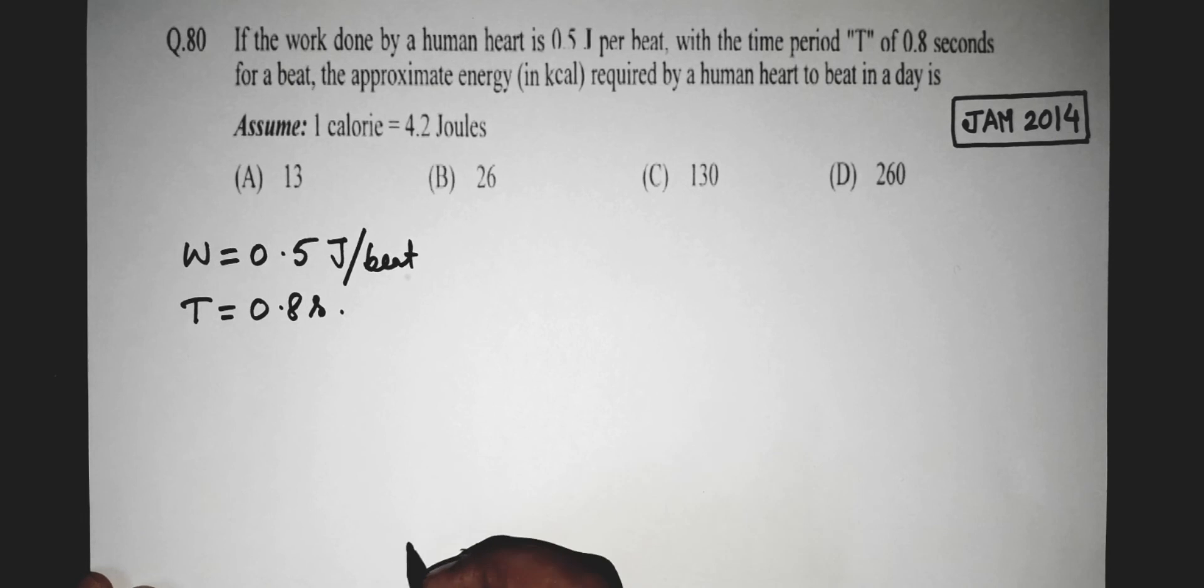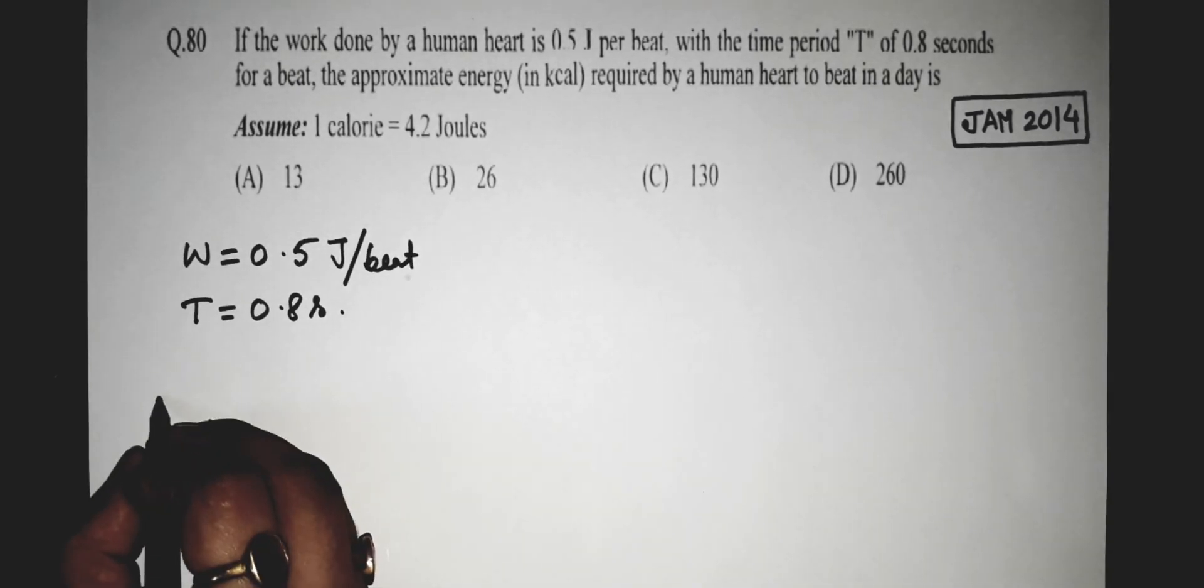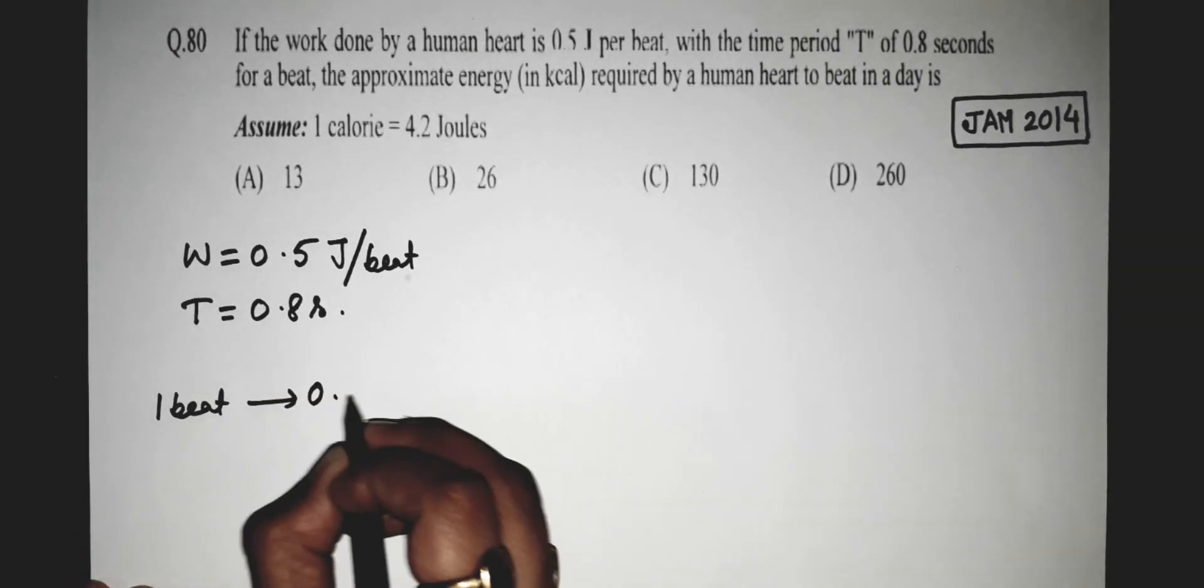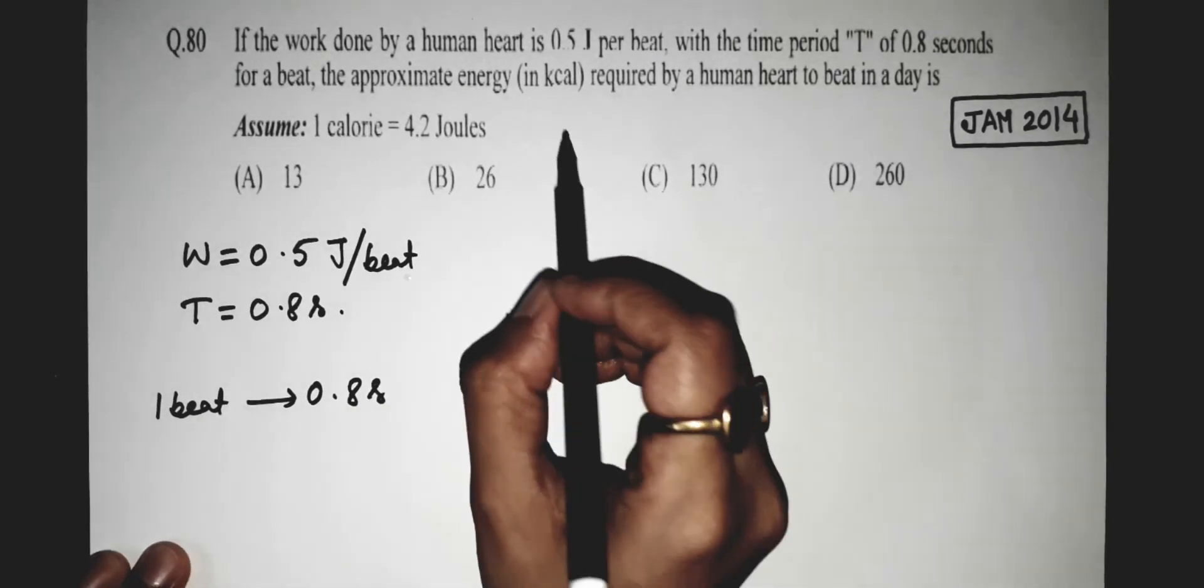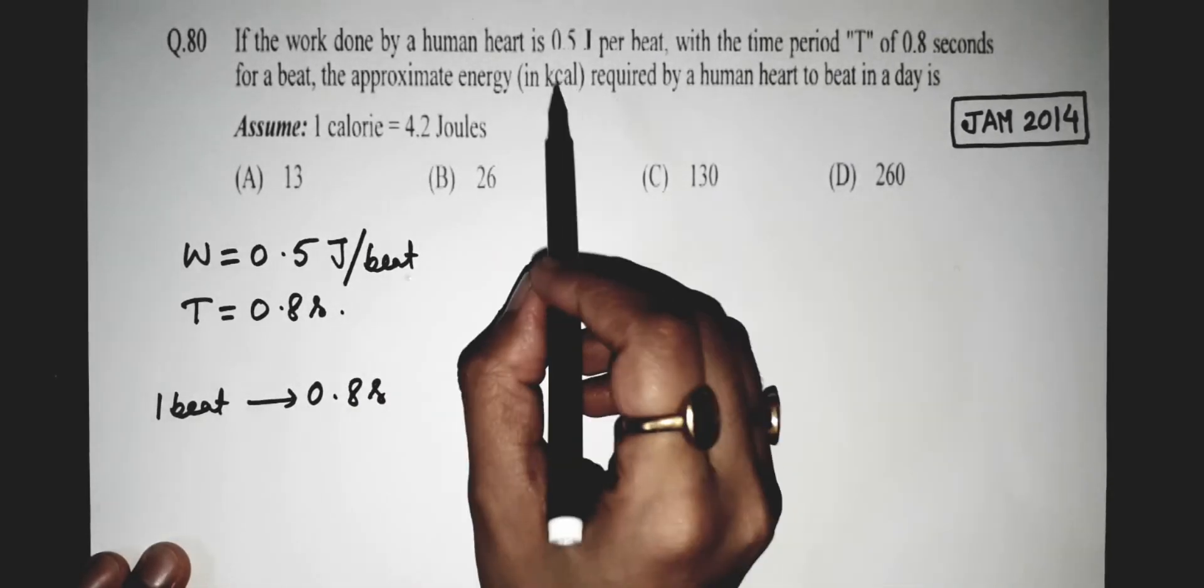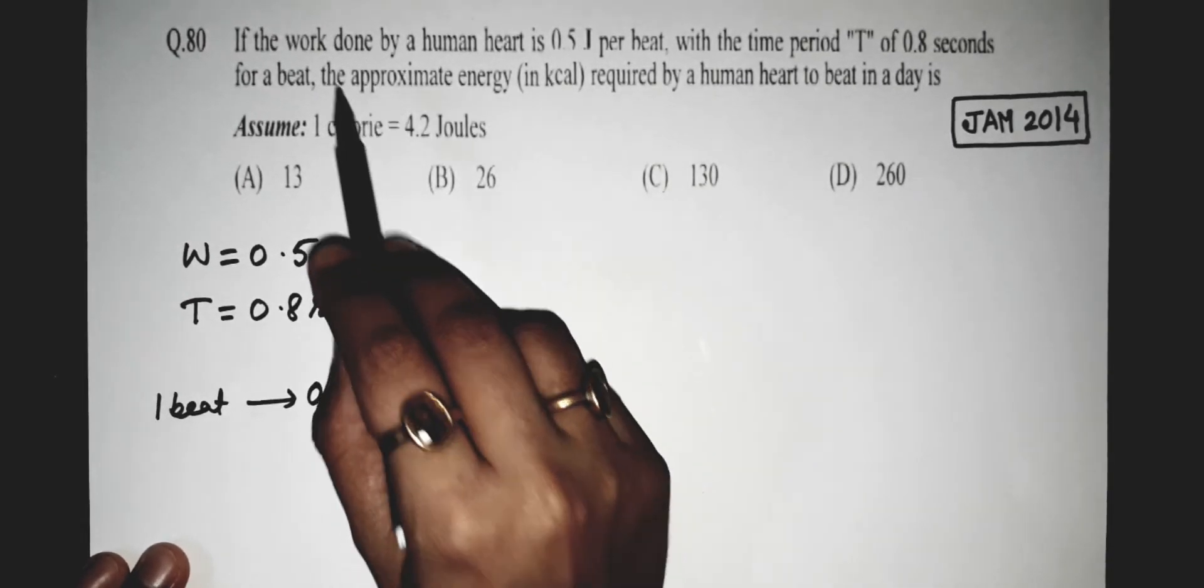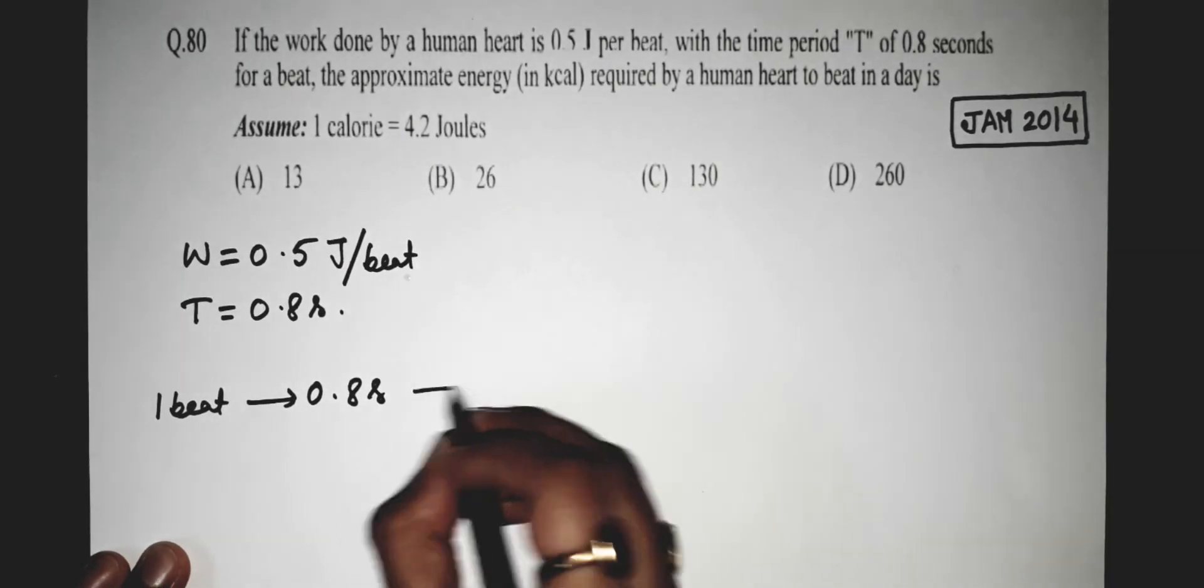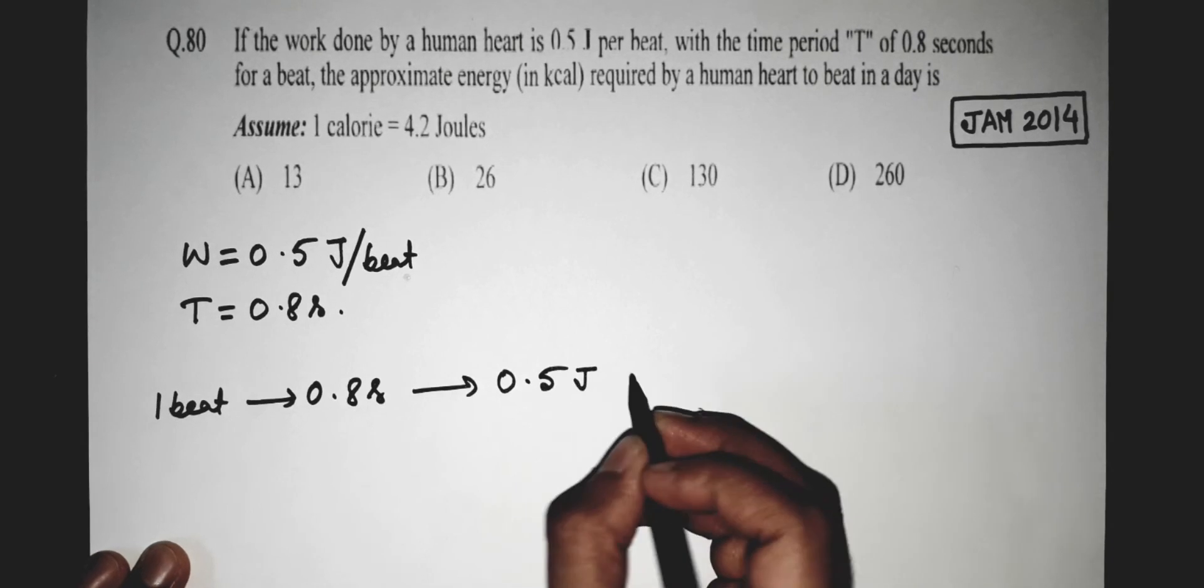Now this means 1 beat consumes 0.8 seconds. And here, the question says in 1 beat, the amount of work done is 0.5 joules. So the amount of work done is 0.5 joules.